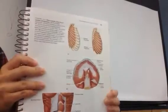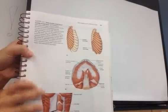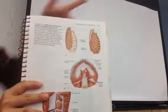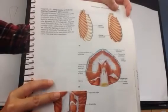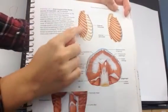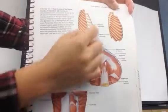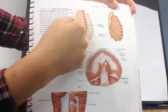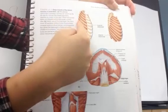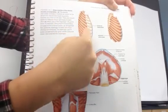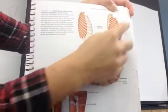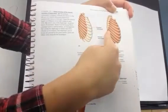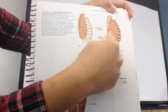So external intercostal and internal intercostal are these two here. I hope you guys can see it but the external intercostal is this one and internal intercostal is that one. And the external one starts from the back and it goes toward the front. The internal one starts from where your sternum is and it kind of go toward the back. So that's one way you can think about it.